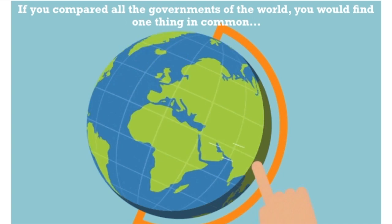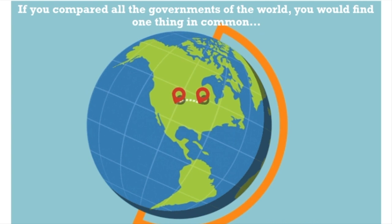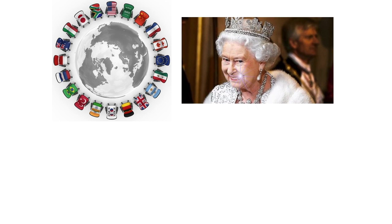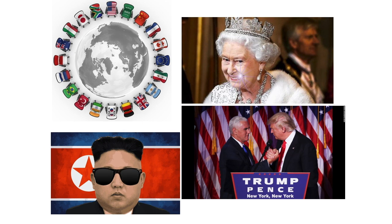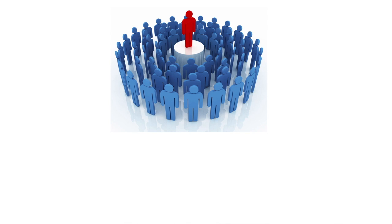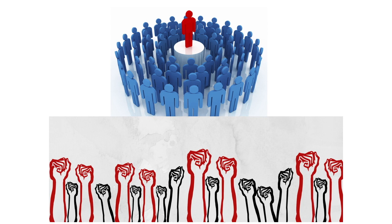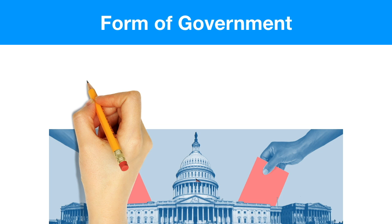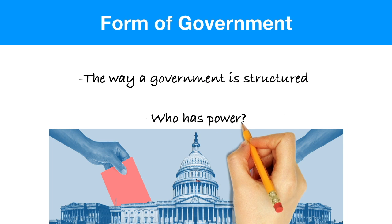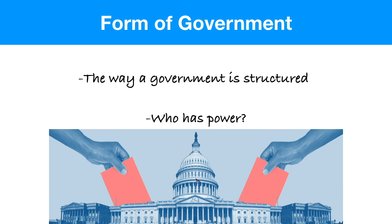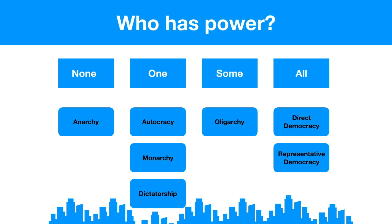If you compared all the governments of the world, you're going to find one thing in common: somebody is in charge. Whoever's in charge is going to look very different depending on where you are in the world. We need to define what form of government means — that is the way a government is structured. It also asks the question: who has the power?